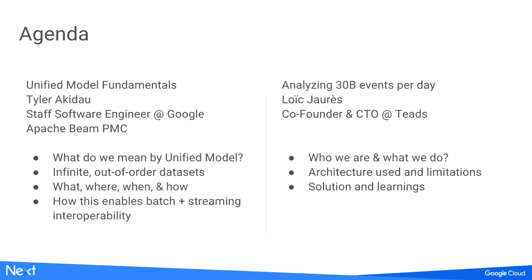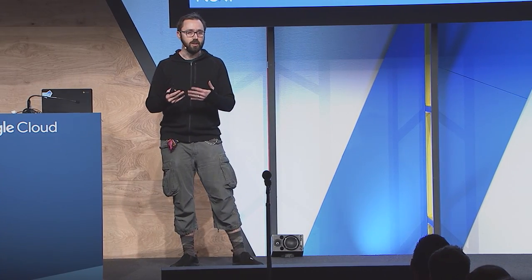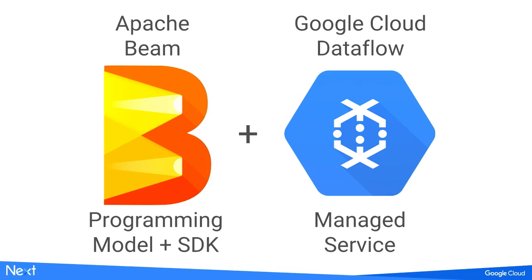Before diving in, I want to clarify the systems I'm going to be talking about. Everything here was originally part of Google Cloud Dataflow, launched back in 2015. About a year ago, we split it into two separate projects: the programming model and SDK were donated to the Apache Software Foundation as a community-driven open source project — that's Apache Beam — while the managed service portion remains Google Cloud Dataflow.